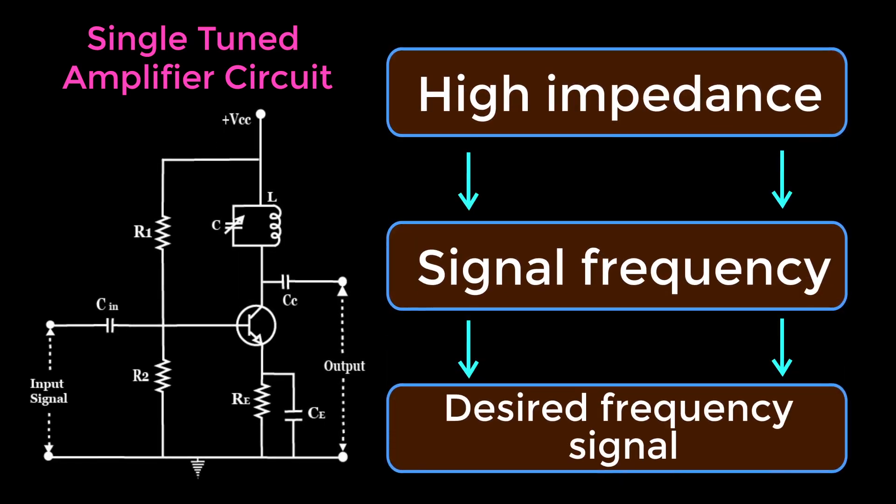As high impedance is offered only for the tuned frequency, all other frequencies which get lower impedance are rejected by the tuned circuit. Hence, the tuned amplifier selects and amplifies the desired frequency signal.